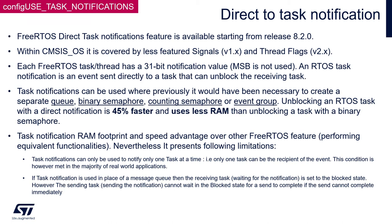Within the notification value, the most significant bit is reserved, so we have 31 bits to be used. As the notification data are stored within the TCB of each task, it is not needed to create any separate operating system object. Thus, using this method is 45% faster and uses less RAM than unblocking a task with a binary semaphore, for example.